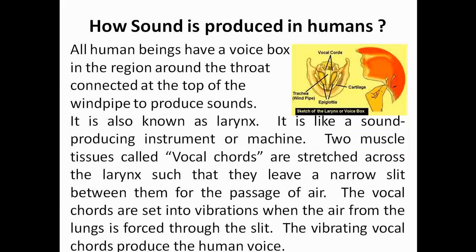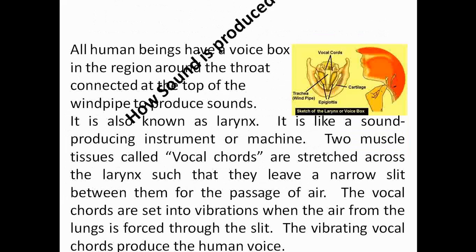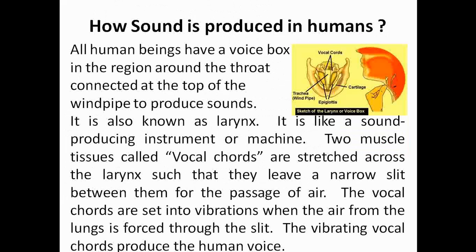How is sound produced in humans? All human beings have a voice box in the region around the throat, connected at the top of the windpipe, to produce sounds. It is also known as the larynx, and it is like a sound-producing instrument or machine. Two muscle tissues called vocal cords are stretched across the larynx, leaving a narrow slit for the passage of air. When air from the lungs is forced through the slit, the vocal cords vibrate and produce the human voice.